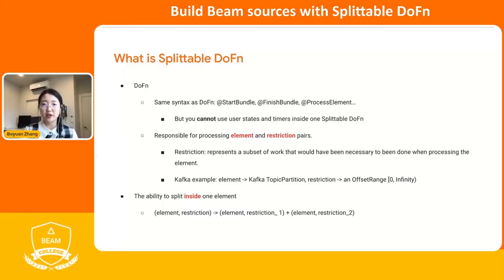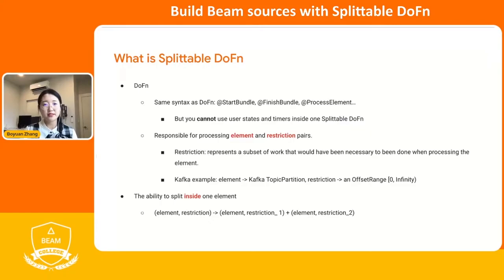Based on that, the process element function will emit records from that. Usually when you're building a source, the element is always a metadata or a source descriptor which describes what kind of things you want to read. The restriction usually describes the amount of data from that source descriptor. For example, in Kafka we use a topic partition as an element to describe which topic and partition we want to read from. For the restriction, we use an offset range to describe the offset for each record. So for the initial one, we will use zero to infinity as the restriction. And then what does Splittable mean for Splittable DoFn?